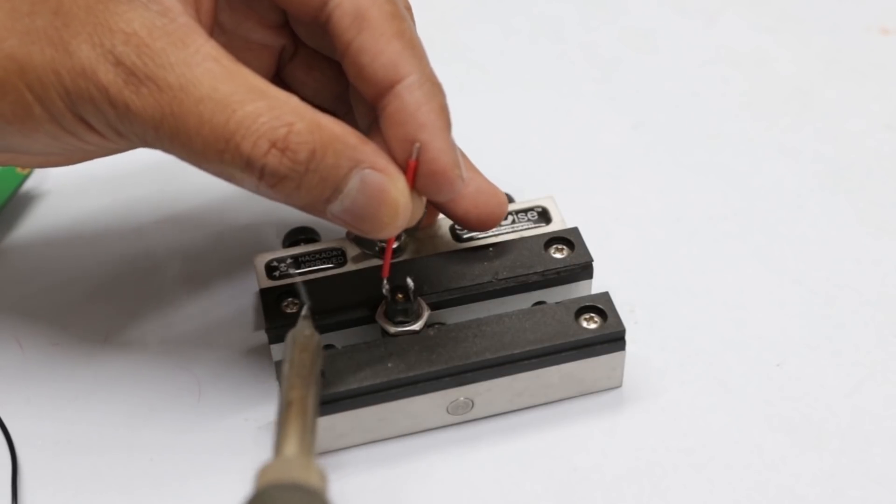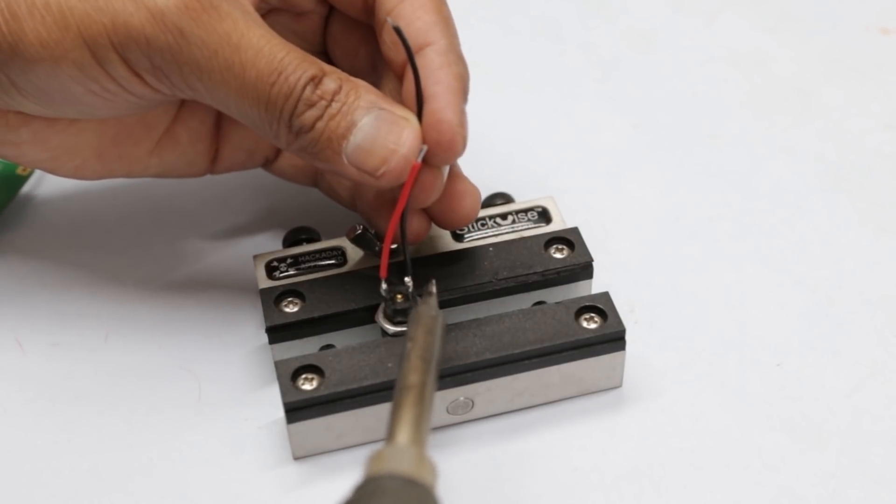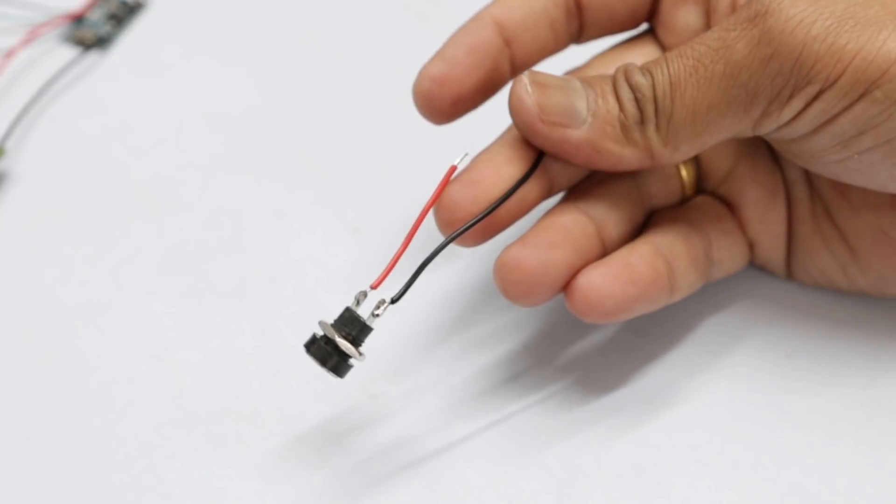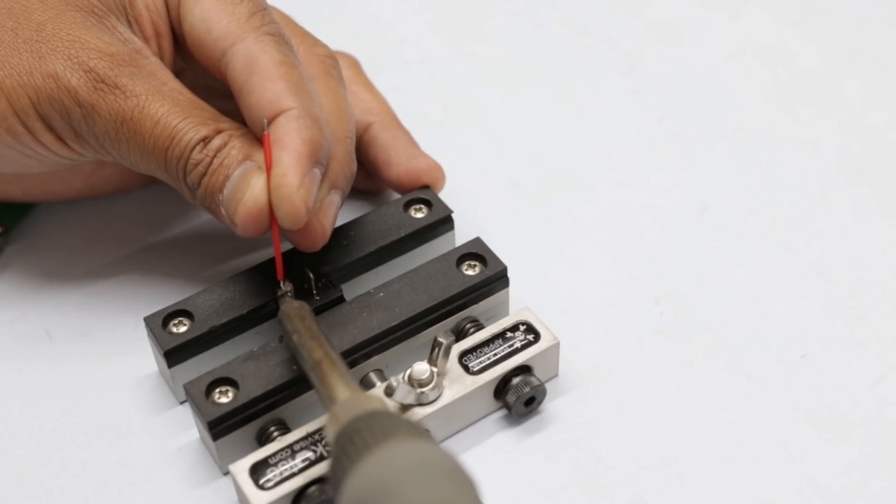Connect a red wire to the positive terminal and a black wire to the negative terminal of DC jack. The smaller leg of the DC jack is positive terminal. Now solder a red wire to the SPST switch.